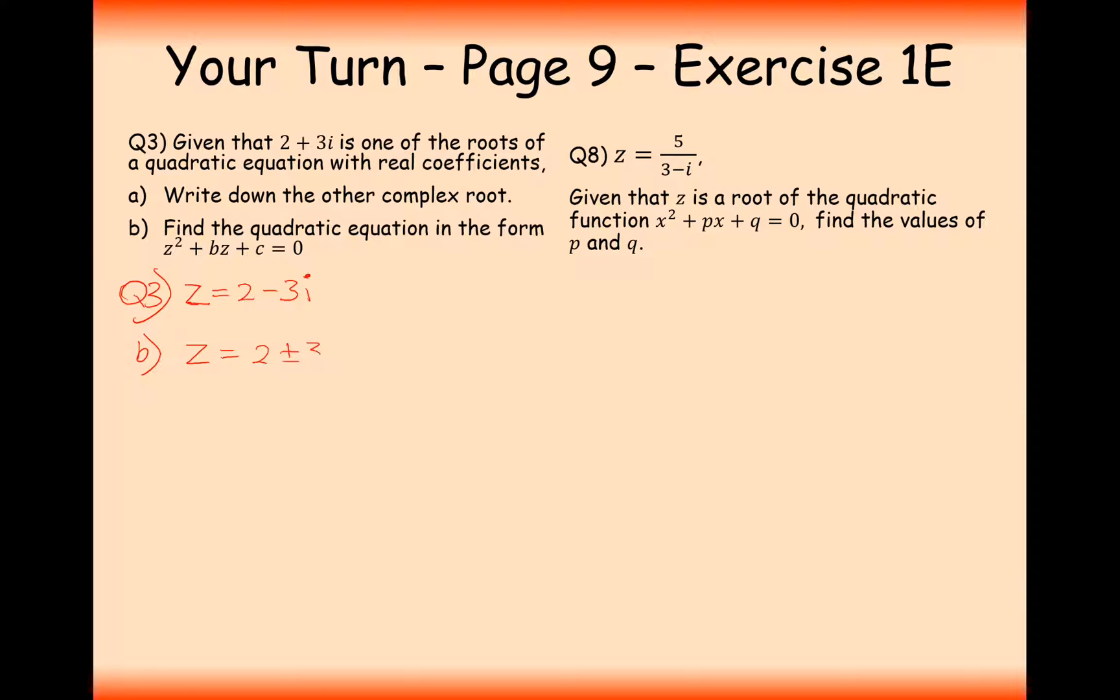In this case, I'm going to do it by the reverse completing the square method. So it's 2 plus or minus 3i. Now let's subtract the 2 onto the other side. Square both sides. z minus 2 squared equals minus 9. And then add the 9 onto the side after you've expanded your brackets. So it's going to be z squared minus 4z plus 13 equals 0. In this case, b is minus 4 and c is 13. That's the answer to question 3.